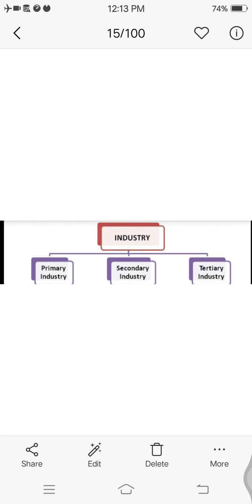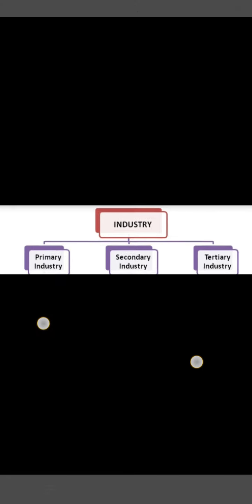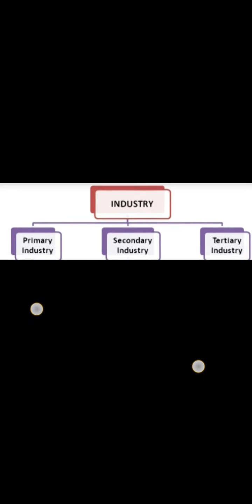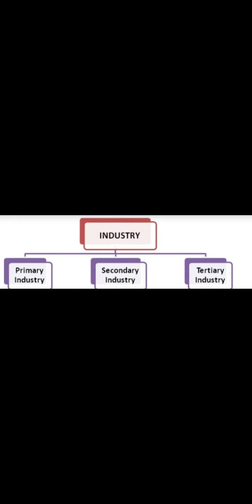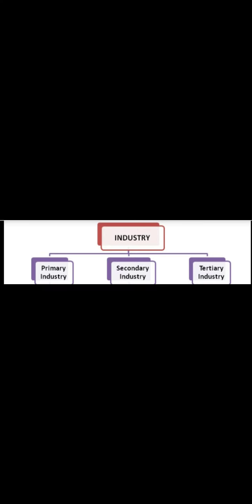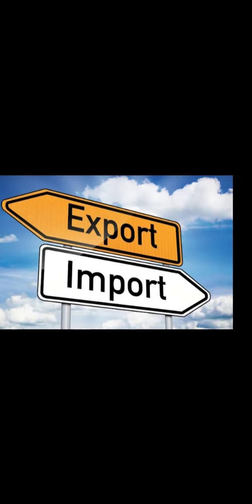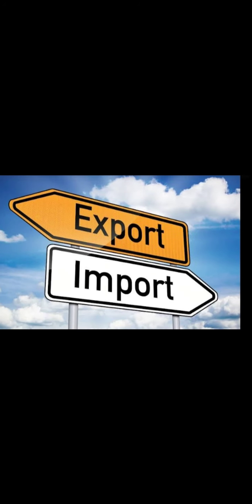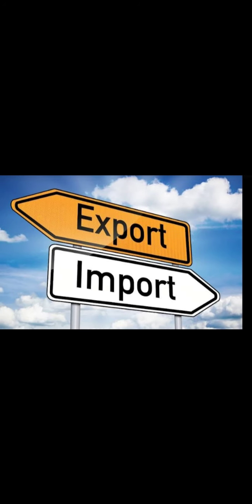There are different types of industries. We are not going into detail, but industries are of three types: primary industry, secondary industry, and tertiary industry. In the primary industry you find raw materials directly from nature. In the secondary industry you find manufactured goods. The tertiary is a service industry. We are not going into detail on those.